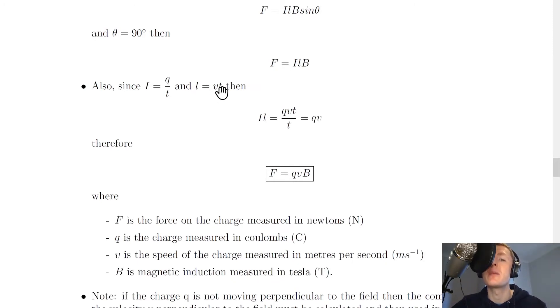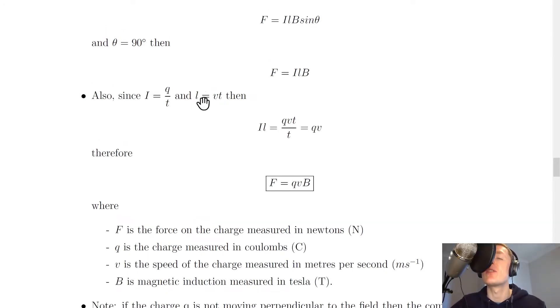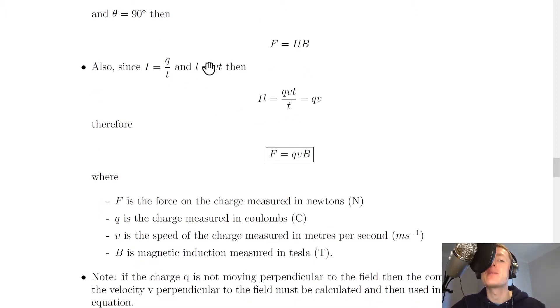So this is distance equals speed times time, where the length l is the length of the wire. We can replace i times l as qt over t times vt. So we get il equals qvt over t, and the t's will cancel out to give us qv.